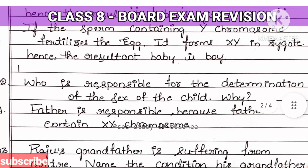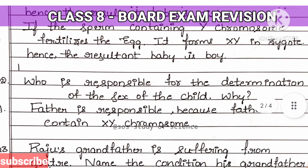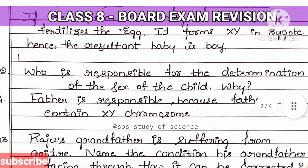The next question: who is responsible for the determination of the sex of the child, and why? It is the father. The father is responsible because the father contains both X and Y chromosomes. That is the reason the father is always responsible for the determination of the sex of the child.